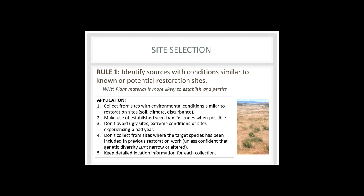Make use of established seed transfer zones when possible. When selecting sites to collect seed from for restoration, don't just go to the easiest site to get to — but also don't avoid sites that may not be particularly pretty. Don't avoid the ugly sites or avoid collecting during extreme conditions or at sites experiencing a bad year. They may have the genetic diversity that would actually be very useful for your restoration. Also make sure you're not collecting from sites where the target species has been included in previous restoration work, unless you're very confident that the genetic diversity was not narrowed or altered from what you would intend to get from that site.